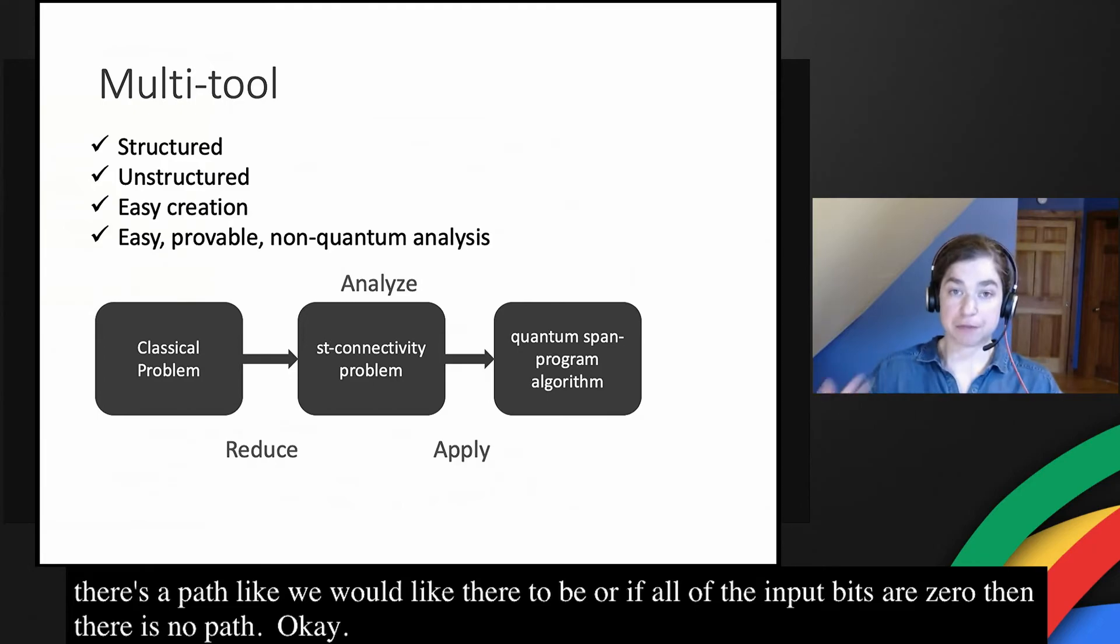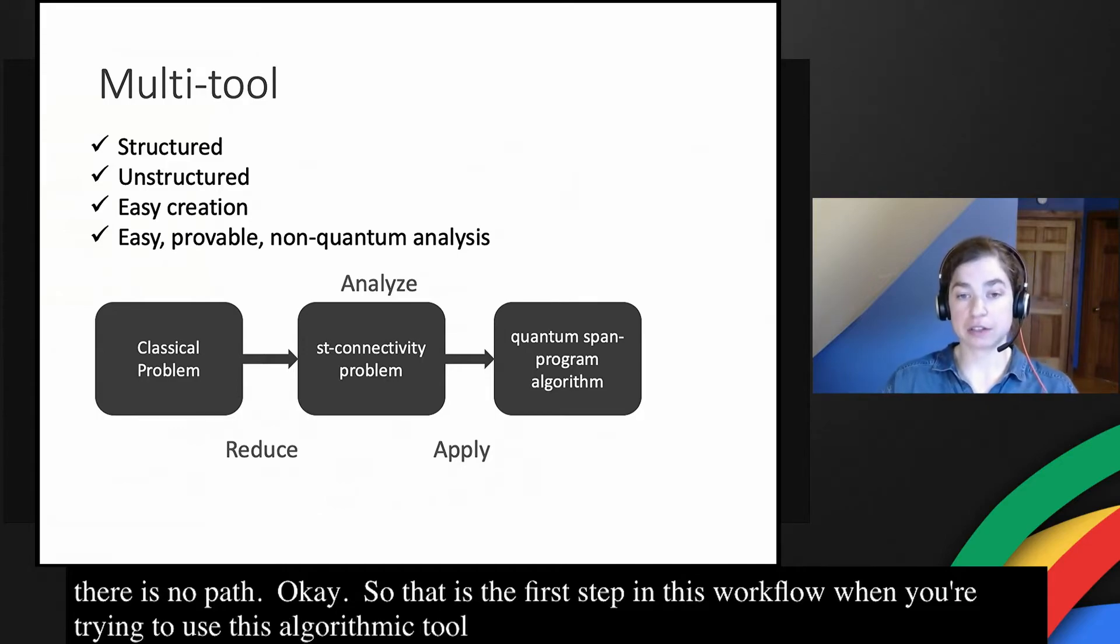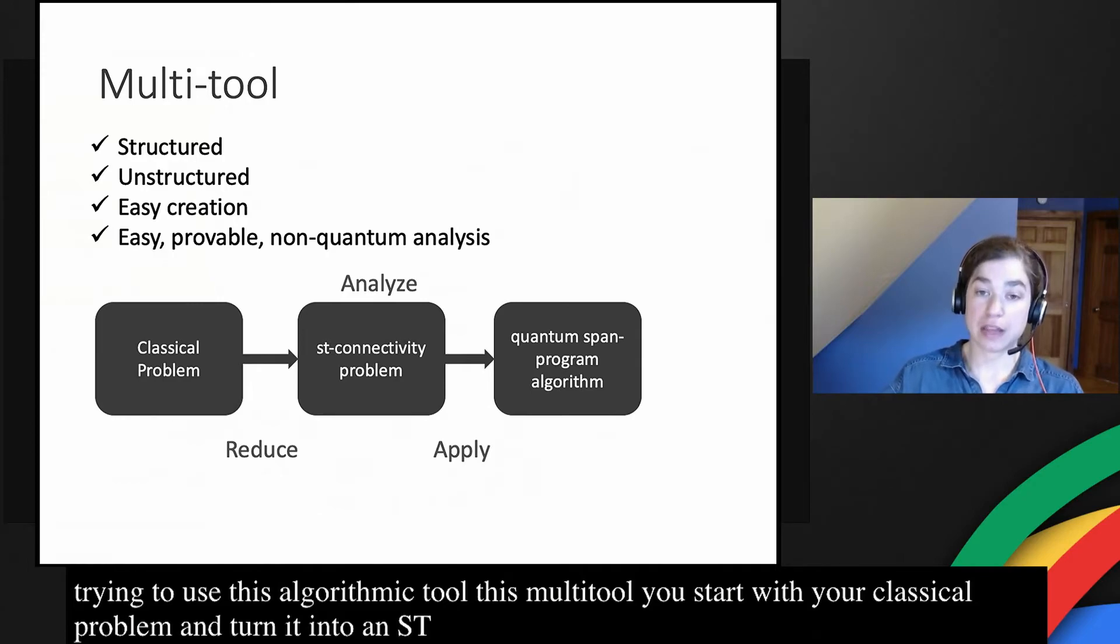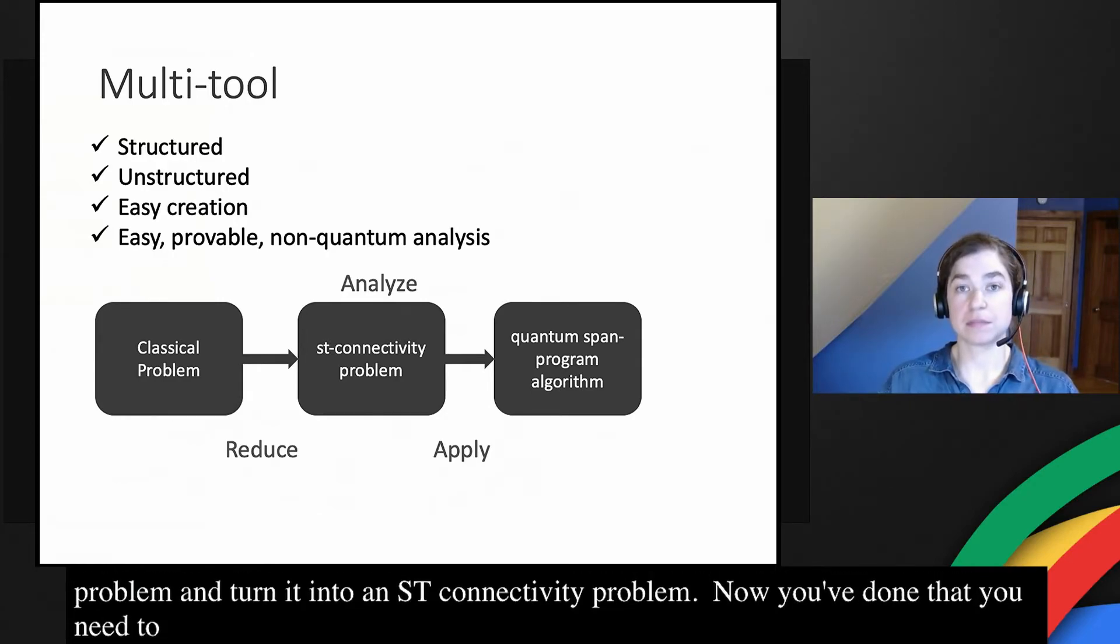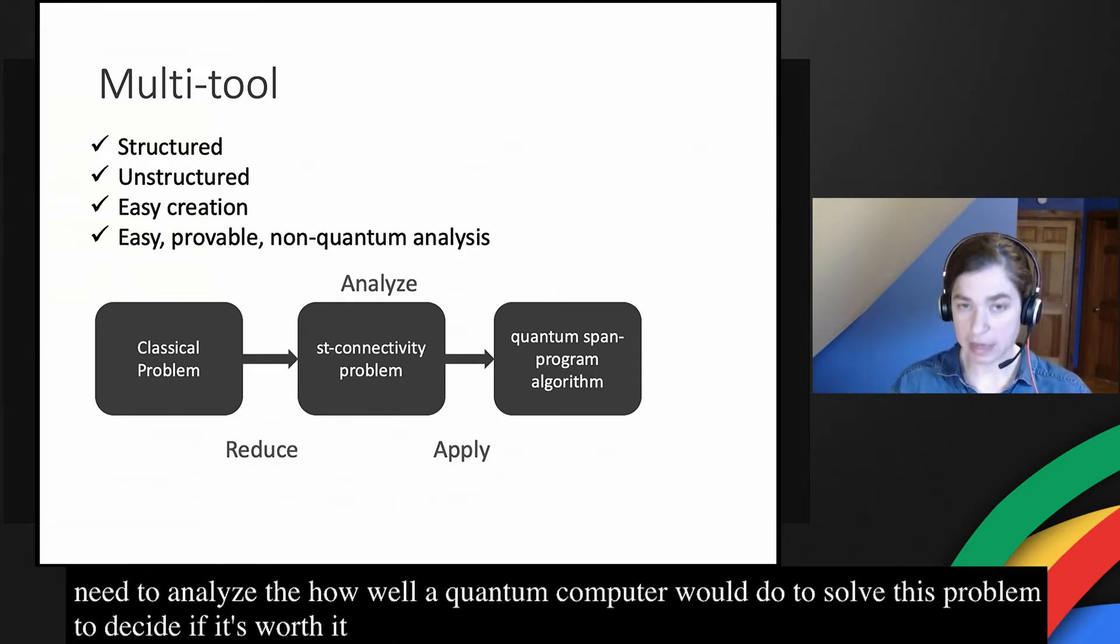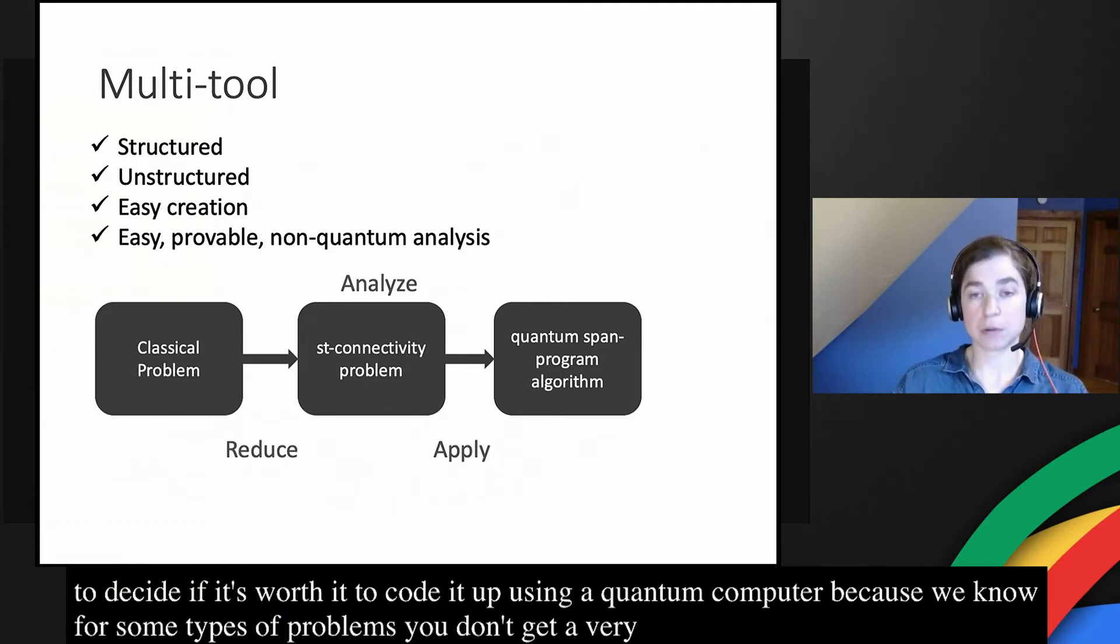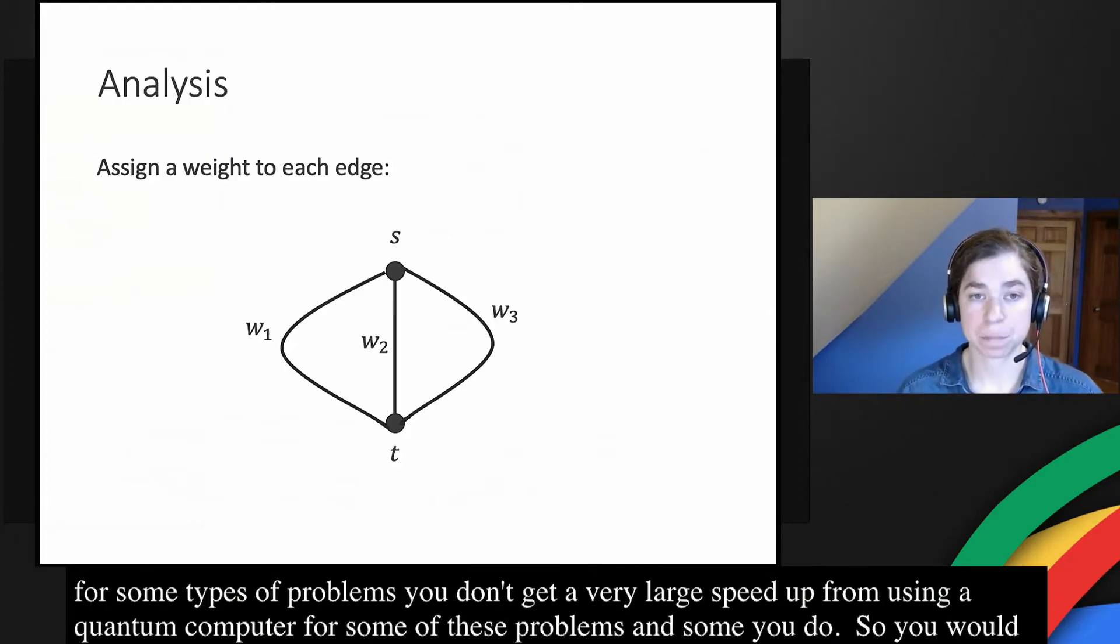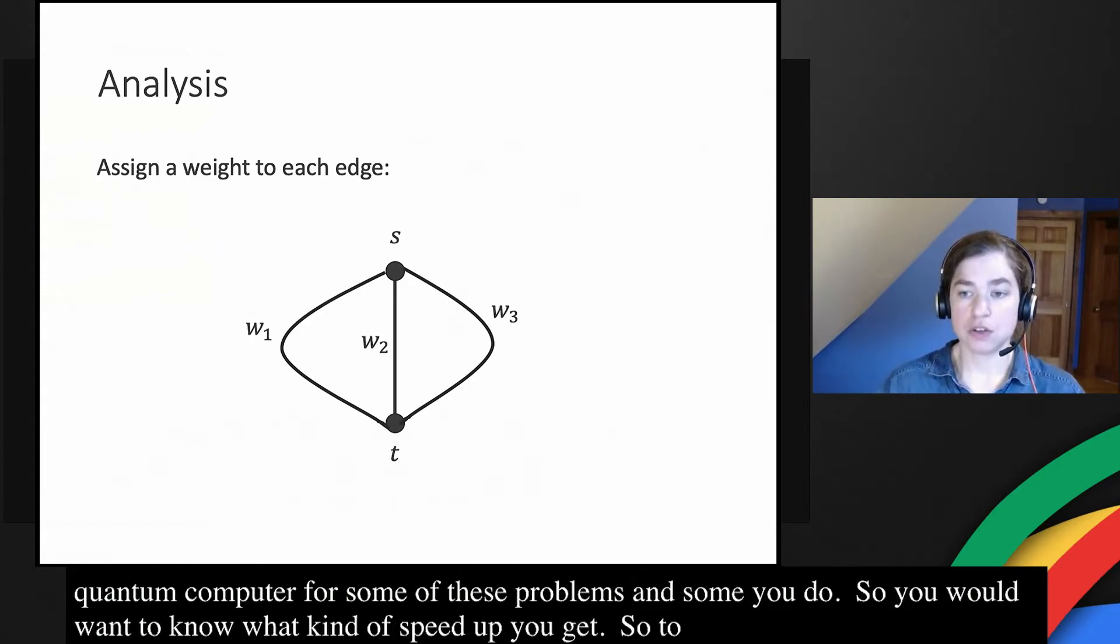That is the first step in this workflow when you're trying to use this algorithmic tool, this multi-tool. You start with your classical problem and you turn it into an ST connectivity problem. Now that you've done that, you need to analyze how well a quantum computer would do to solve this ST connectivity problem to decide if it's worth it to encode it up using a quantum computer. We know for some types of problems, you don't get a very large speed up from using a quantum computer and for some you do. So you want to know what kind of a speed up you get.